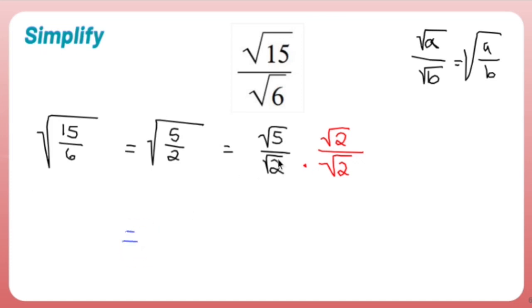That makes this root 5 times root 2, which is the square root of 10 over, again, I'm going to explain and show you what I did, the square root of 2 squared. Okay, root 2 times root 2 is root 2 squared. Now a root 2 squared means that the root and the squares cancel each other out, leaving us with the square root of 10 over 2.